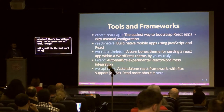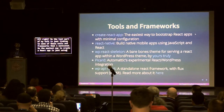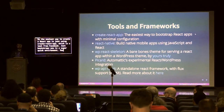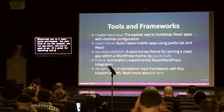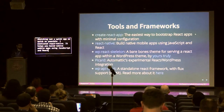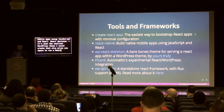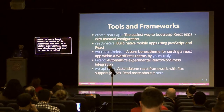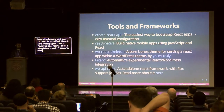The last part of my talk links to some of the tools and frameworks I mentioned. The easiest way to create a React app is using Create React App, a tool from Facebook that bootstraps you in a super quick environment — just run the command, run npm start, and you're good to go. React Native helps you build mobile apps using JavaScript and React. React Skeleton is the minimal WordPress theme I mentioned. Automattic has one called Picard — highly experimental but pretty good. I also found one called WP API React, a standalone framework with Flux implementation via something called Alt.